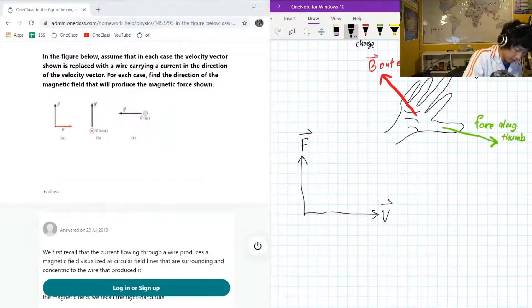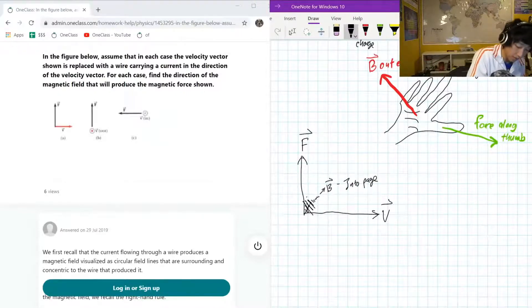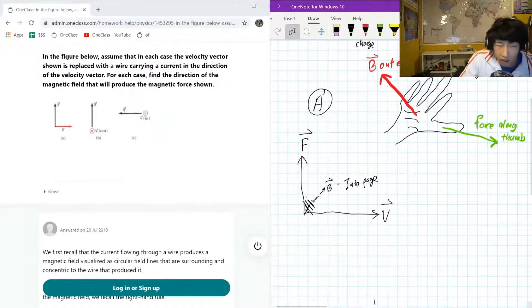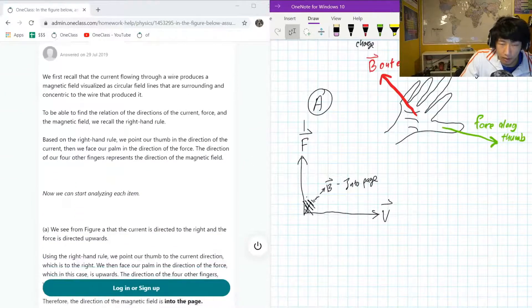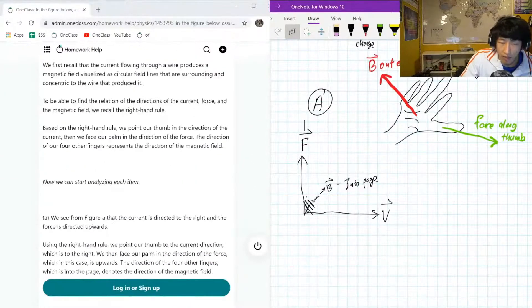So B field is going into the page. And we can kind of represent this as like, I know in chemistry, we represent it as like, you know, it starts out big, then it eventually gets smaller. So that's the direction of the B field into page. Okay, so this would be our part A. Part A is into the page. That's awesome.